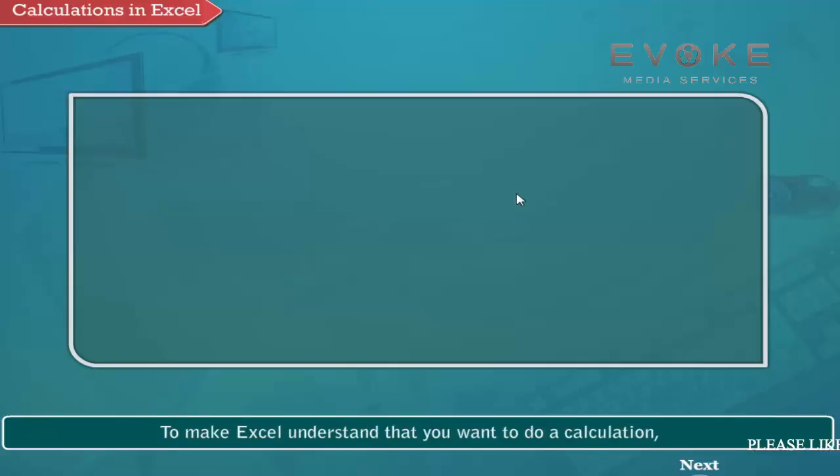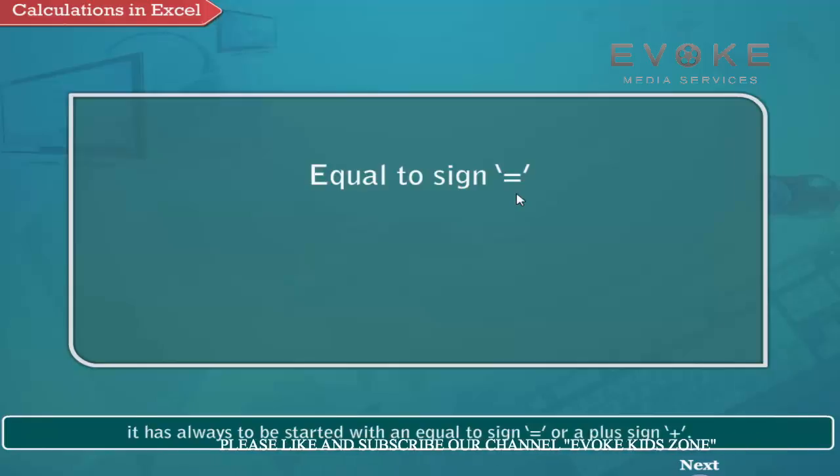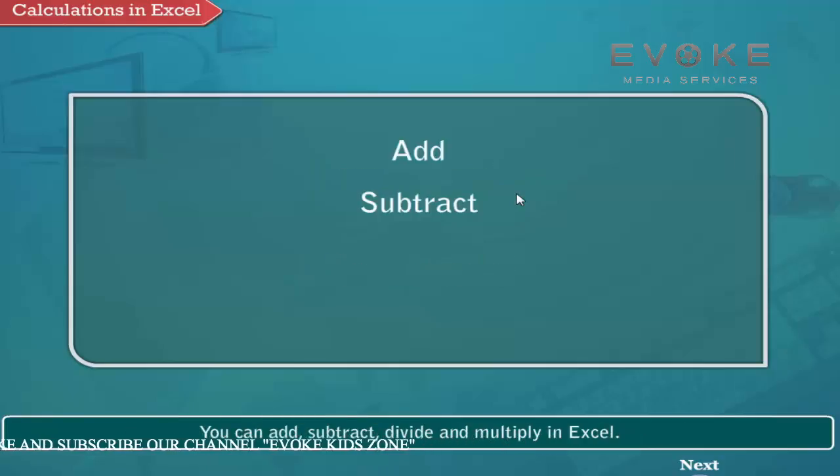To make Excel understand that you want to do a calculation, it has always to be started with an equal to sign or a plus sign. You can add, subtract, divide and multiply in Excel.